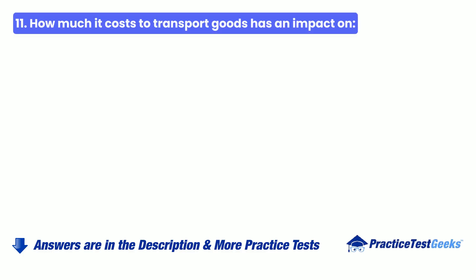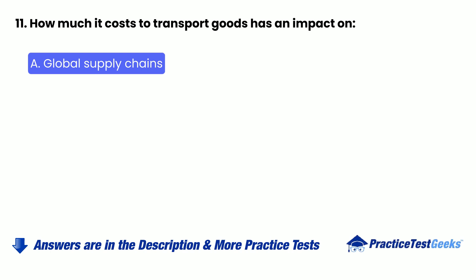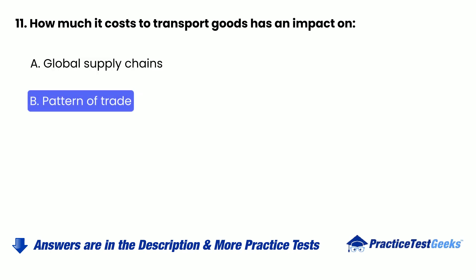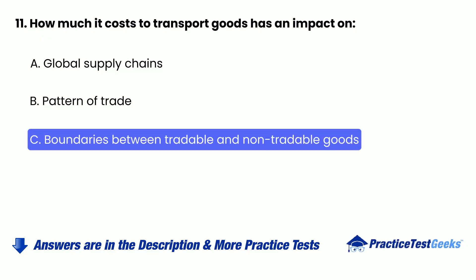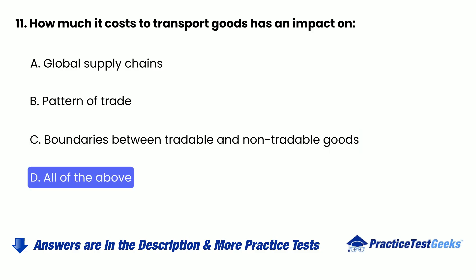Question 11: How much it costs to transport goods has an impact on — A. Global Supply Chains, B. Pattern of Trade, C. Boundaries between tradable and non-tradable goods, D. All of the above.